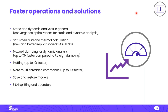We improved how static and dynamic analyses are executed — they got somewhat faster through optimizations of the convergence criterion. Saturated fluid and thermal calculations got much faster with new implicit solvers. For dynamic analysis there is a new Maxwell damping option. Plotting got faster — multi-threading in plotting made it almost 10 times faster in FLAC 2D and FLAC 3D. Additional commands were multi-threaded, save and restore models are faster, and there are more FISH splitting and operators.